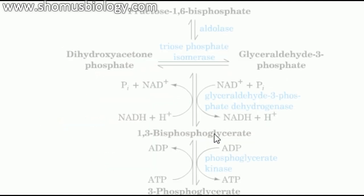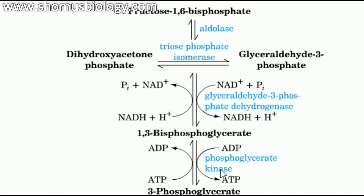From phosphoenolpyruvate to fructose 1,6-bisphosphate, the glycolytic enzymes operate near equilibrium. If the concentration of phosphoenolpyruvate is sufficient, the reaction is driven in the reverse of glycolysis — that is the rate-determining step. Six enzymes participate in both glycolysis and gluconeogenesis for this portion, using the same enzymes and similar pathways in both directions.